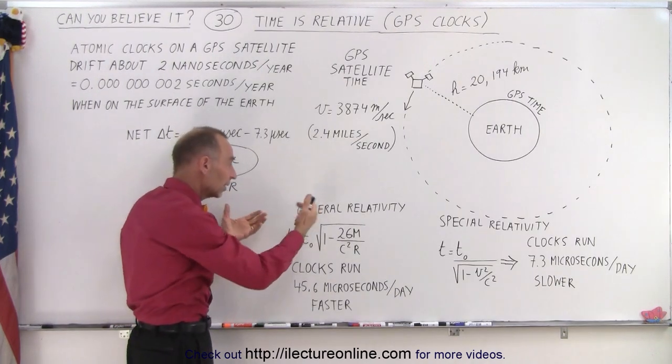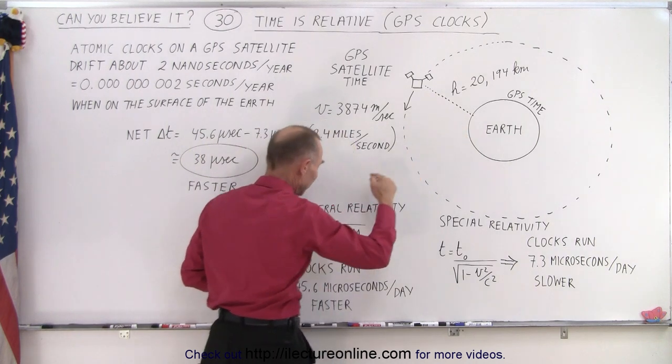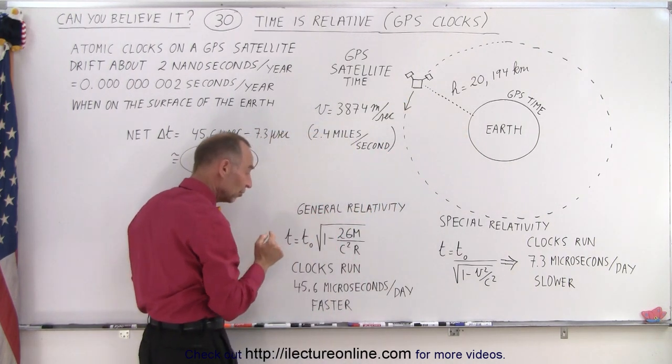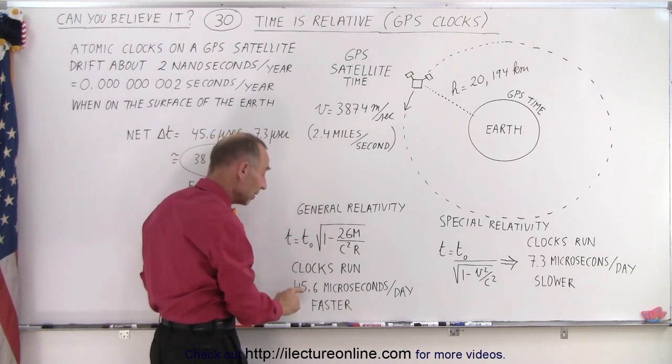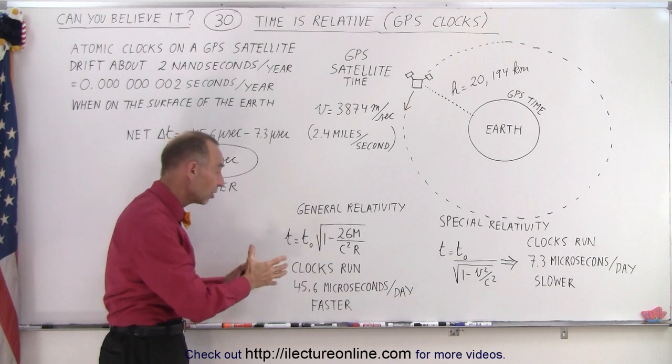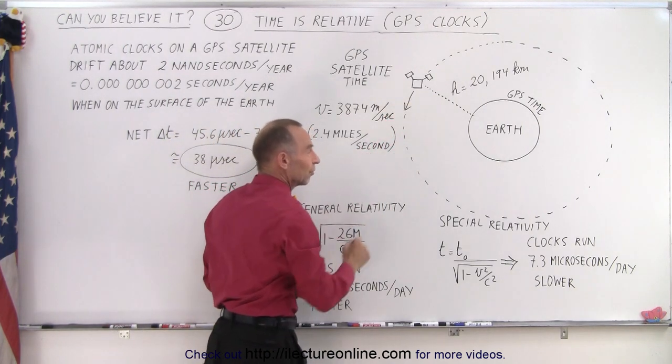So when you calculate the general relativity equation, and of course you have to do this once for the surface of the Earth, you do it again for where the satellites are at, you take that difference in time, and it turns out that difference in time is about 45.6 microseconds per day, where the clocks actually run faster in the satellites than they do on the surface of the Earth.